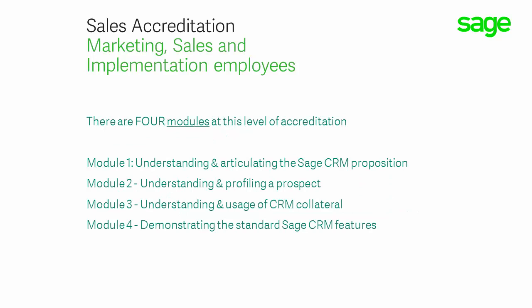There are four modules at this level of accreditation. Module 1: Understanding and Articulating the Sage CRM Proposition. Module 2: Understanding and Profiling a Prospect. Module 3: Understanding and the Usage of CRM Collateral. And Module 4: Demonstrating the Standard Sage CRM Features.